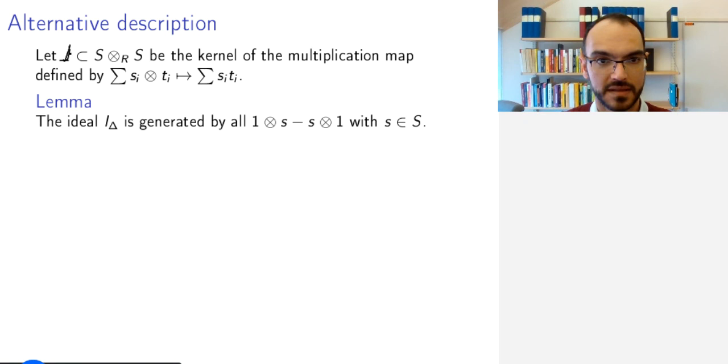One can show that this ideal is generated by all elements of the form 1⊗s - s⊗1. It is clear that these elements belong to the ideal because 1·s - s·1 = 0, so it's in the kernel of the multiplication. One can show that anything in the ideal comes from this. This generates the ideal.